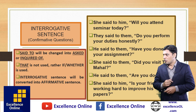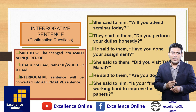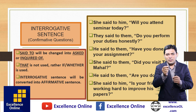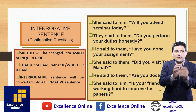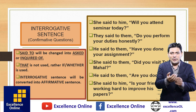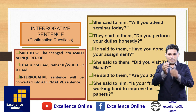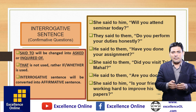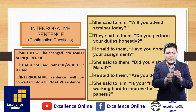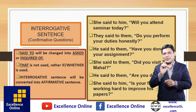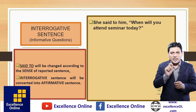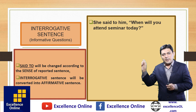To summarize the rules for interrogative sentences: First, 'said to' changes to 'asked,' 'inquired of,' or 'interrogated.' Second, for joining two clauses, we do not use 'that' — we use 'if' or 'whether.' Third, the general principles from previous classes apply: 'today' becomes 'that day,' 'yesterday' becomes 'the day before,' tenses change, and first and second person pronouns change accordingly.